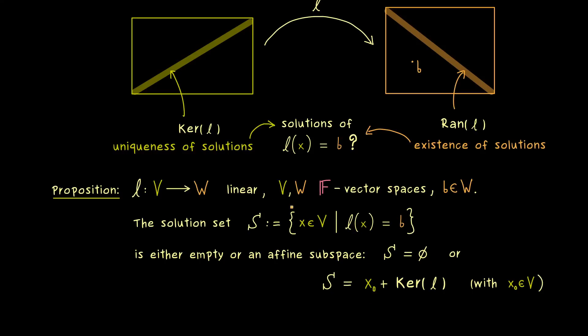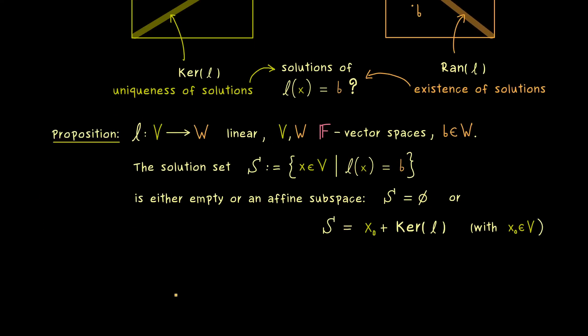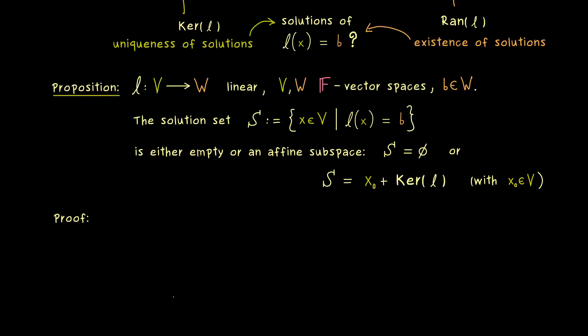And now it turns out that even the proof is exactly the same again. However, for the sake of completeness, let's quickly write it down again. So let's assume that S is not the empty set, so that we find at least one x_0 in it. Explicitly, this means if we put x_0 into l, we get out the vector b.